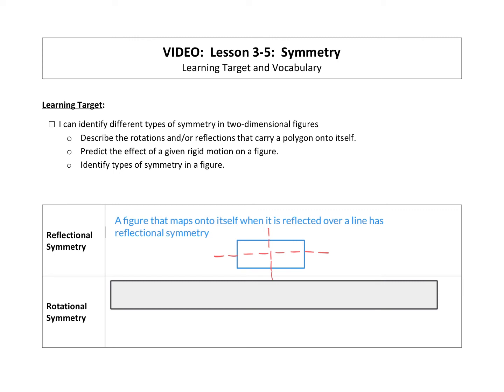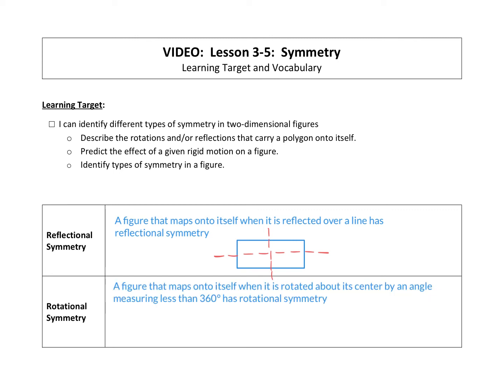We also have something called rotational symmetry. A figure that maps onto itself when it is rotated about its center by an angle measuring less than 360 degrees has rotational symmetry.